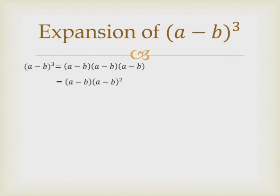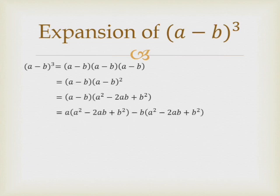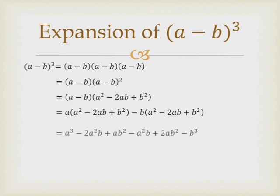So this becomes (a minus b) into (a minus b) squared. Now we apply the identity for (a minus b) squared, giving us (a minus b) into (a squared minus 2ab plus b squared). Now we do the multiplication of the first bracket into the second bracket — we take a from the first bracket into the second bracket, and then minus b from the first bracket into the second bracket.